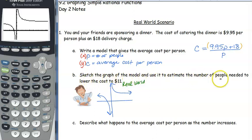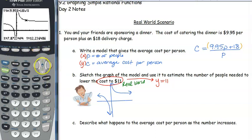So we want to sketch the graph, which we did, of the model and use it to estimate the number of people needed to lower the cost to $11. If I am lowering the cost to $11, we want our Y value to be $11. So there's a couple different ways we can do this. We can try tracing. So we trace and we keep on going until we find our Y to be $11. Our cost is going up, we're going the wrong direction. Keep going, keep going, keep going. We're getting closer, getting closer. Alright, so we know it's going to be around $17.